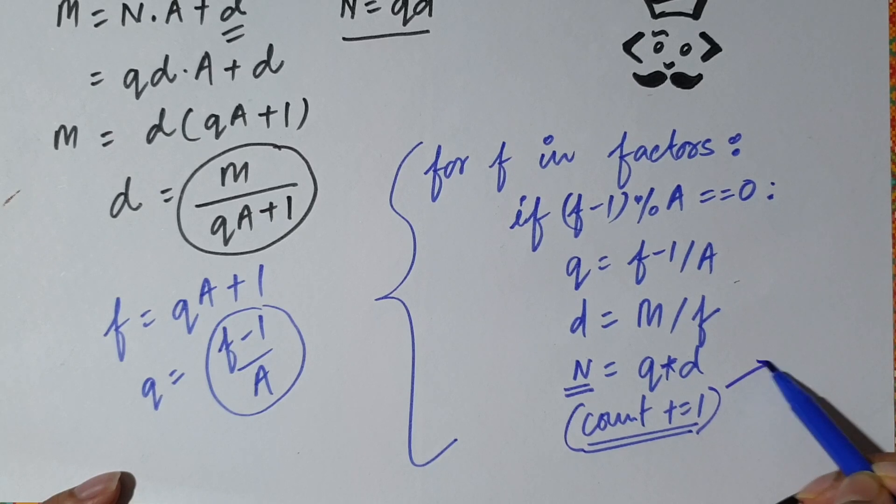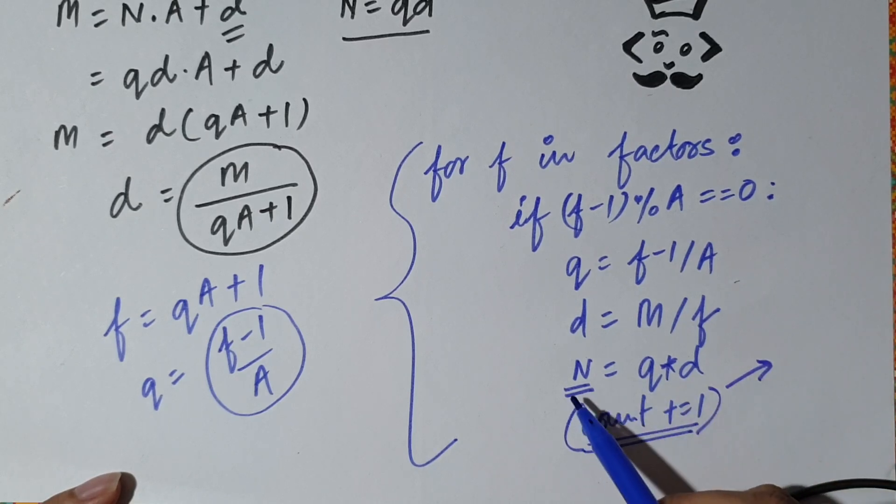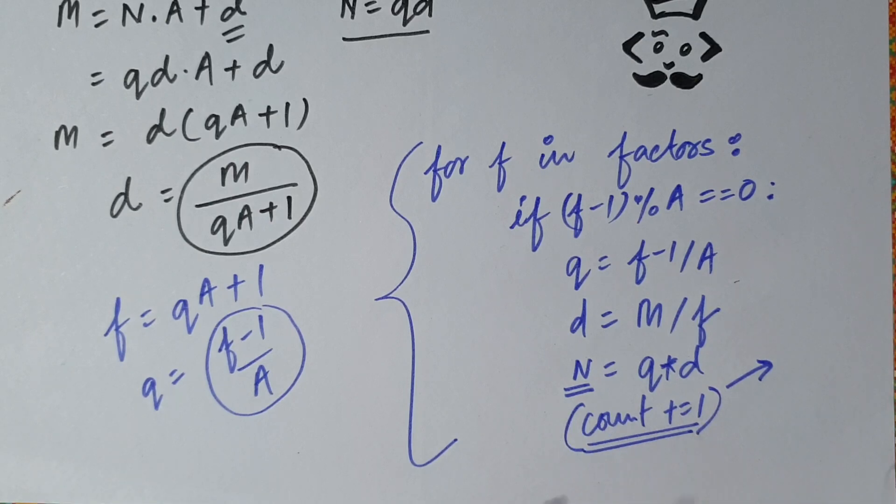So finally, we output the count and we sort N because that is what is required in the output. We need sorted N's to be displayed. So we sort N, we first display the count, then we display the sorted N. So that's all for this question.